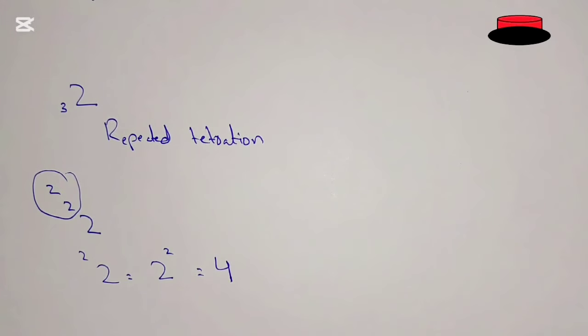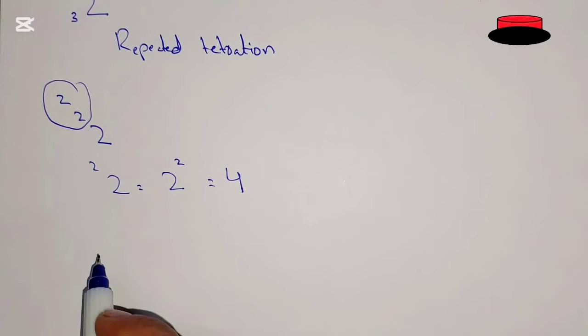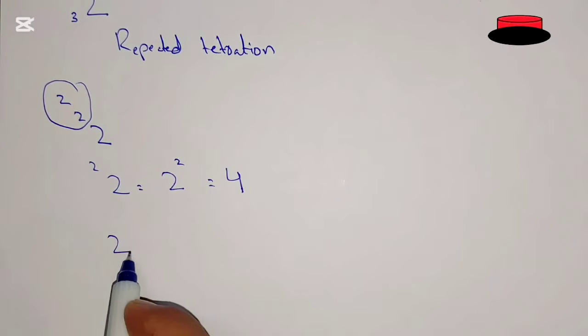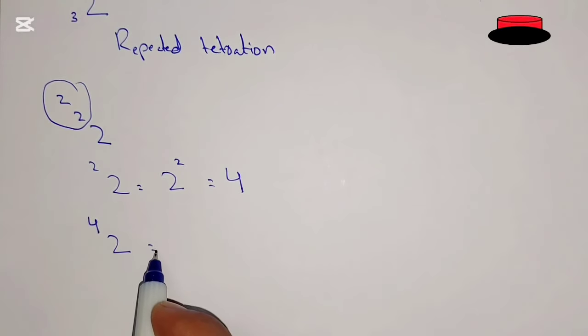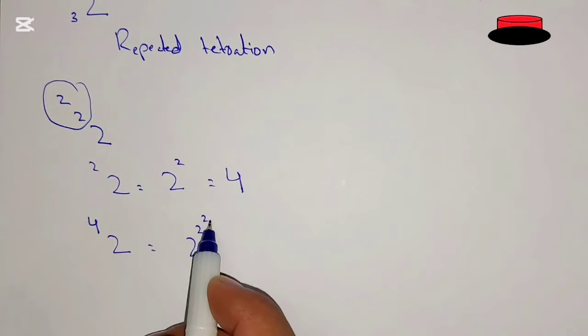And again, going to the process of tetration, it means 2 over 4 on the left side. Repeating that process again, it means 2 power 2, 4 times. So 2 power 2 power 2 power 2. We will solve from top to bottom. 2 power 2 is 4, so it is going to be 2 power 2 power 4.